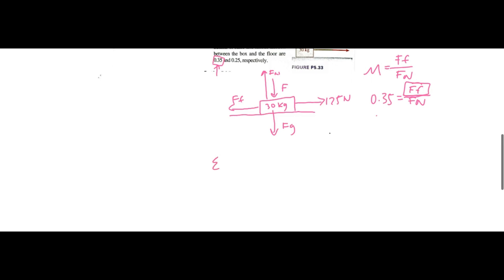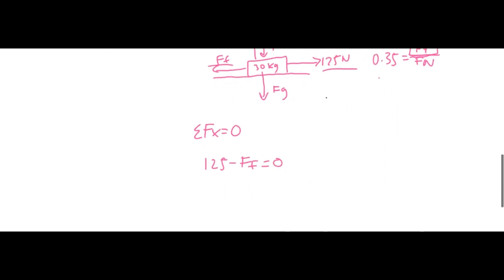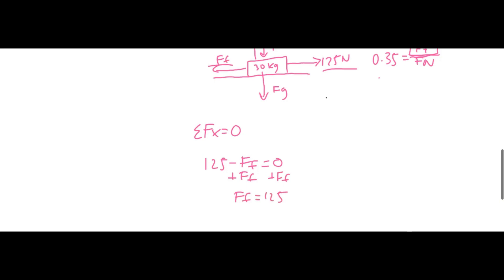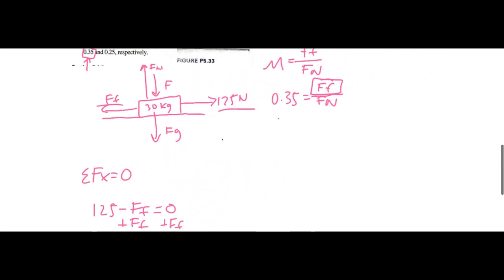We know that the sum of all the forces, if the object isn't moving, the sum of the forces in the x will be 0. We have two forces acting: the 125 newtons and the force of friction. So we can write 125 minus the friction force equals 0. If we add friction force to each side we can see that friction force will be 125. So we can have 0.35 equals 125 friction force over Fn.